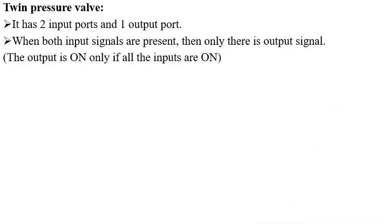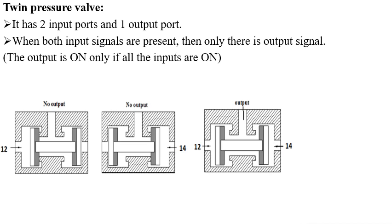The twin pressure valve (two-pressure valve) also has two input ports and one outlet port, similar to the shuttle valve. However, unlike the shuttle valve which requires only one side pressurized, the twin pressure valve requires both input ports to be pressurized simultaneously in order to allow an output from itself.